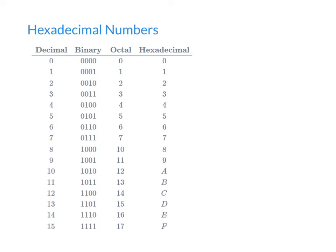As a quick recap: the decimal system of numbers is base 10, meaning there are 10 possible digits available — 0 to 9 — before we start entering double digits. In the octal system of numbers we have 8 digits available, 0 to 7, before entering double digits.